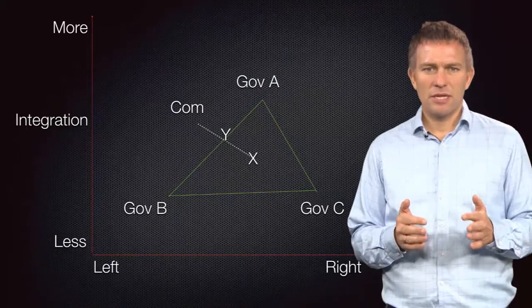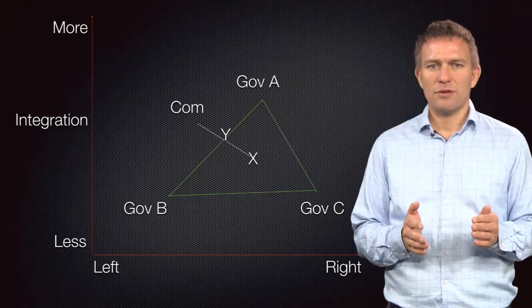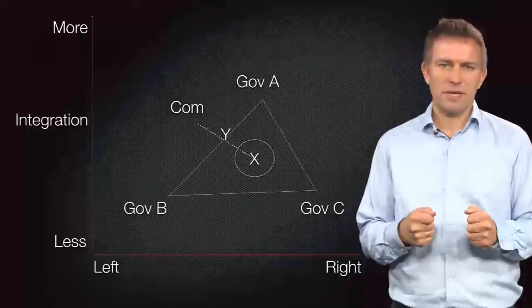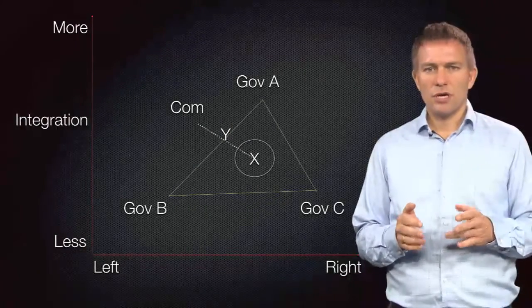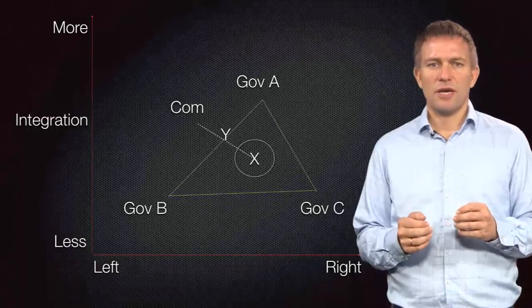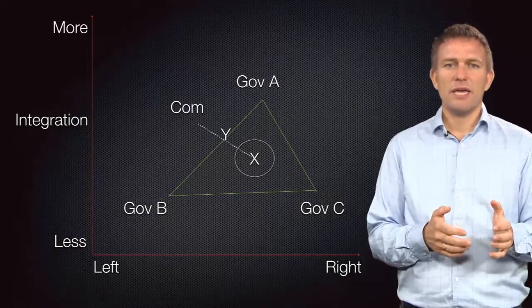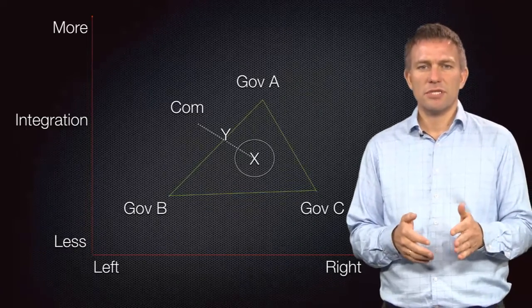And after some initial negotiations, the three governments have agreed on a package of moderate integrationist and centrist policies. They have also concluded on a commission in charge of the process. The commission prefers as much integration as Government A, and almost as leftist policies as Government B.